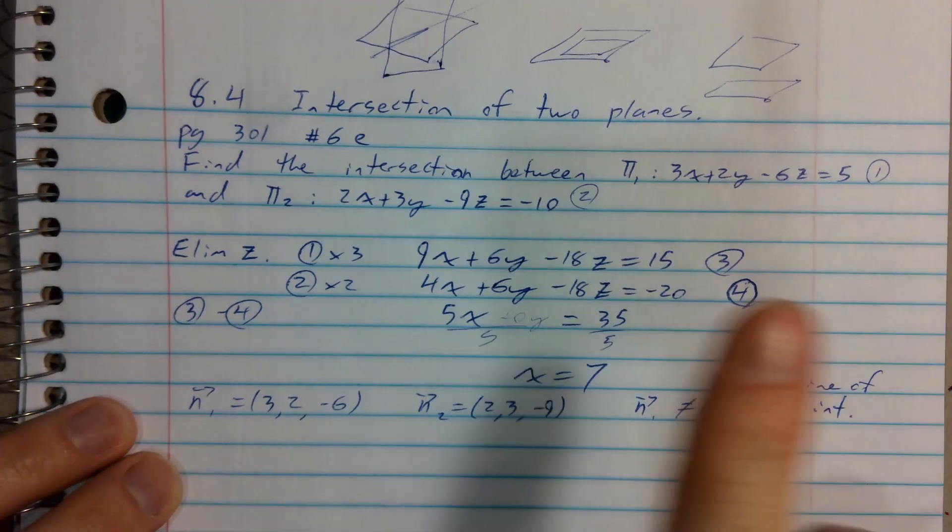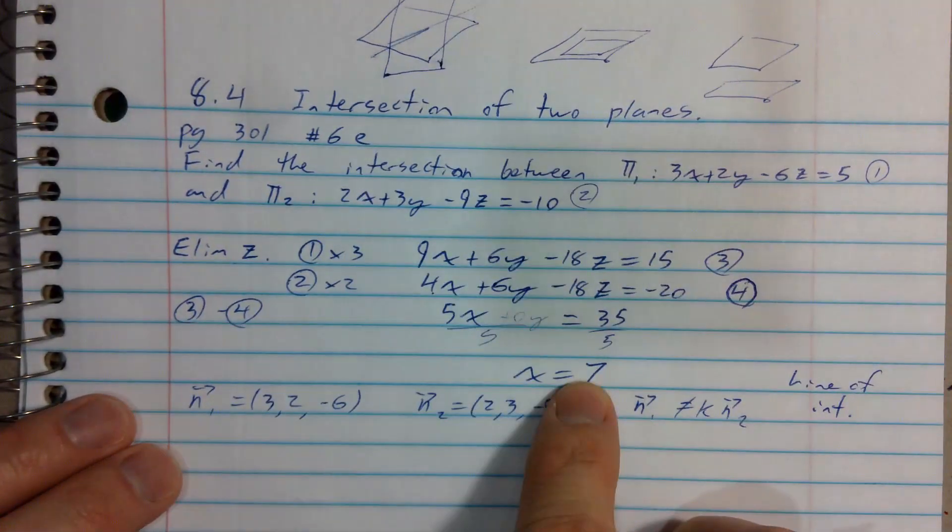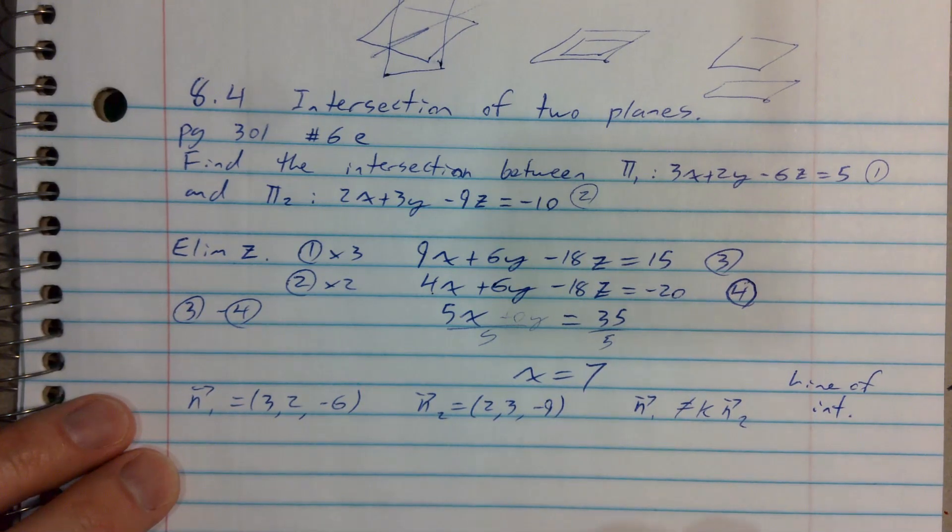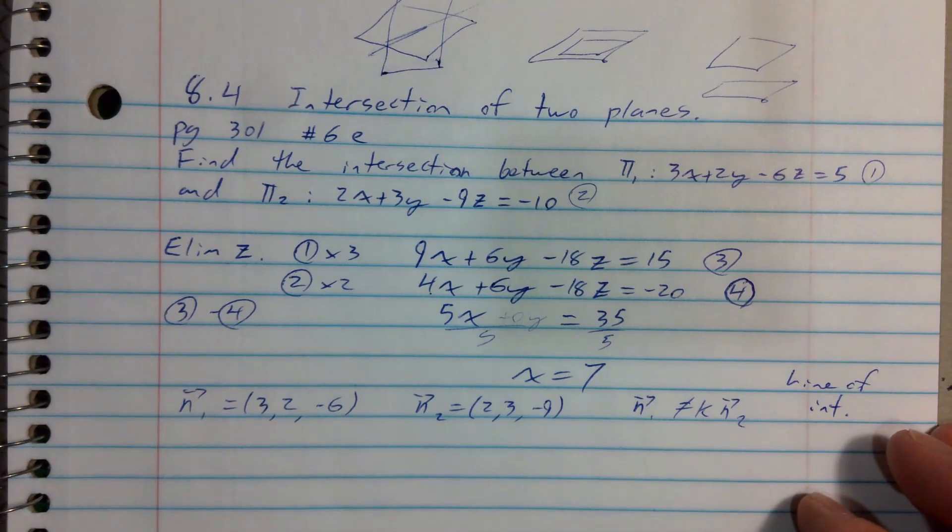I wonder then if it's possible that maybe on this line of intersection, the x value just doesn't change. The x value stays the same.